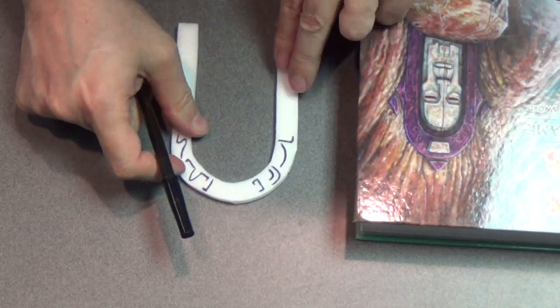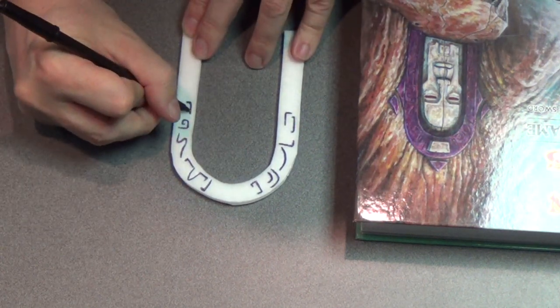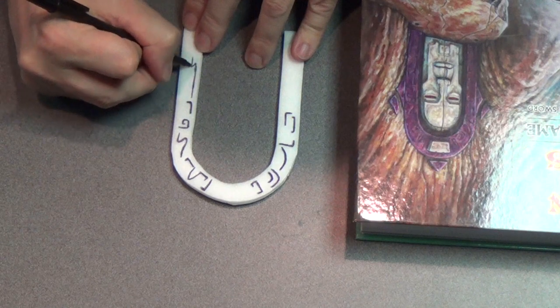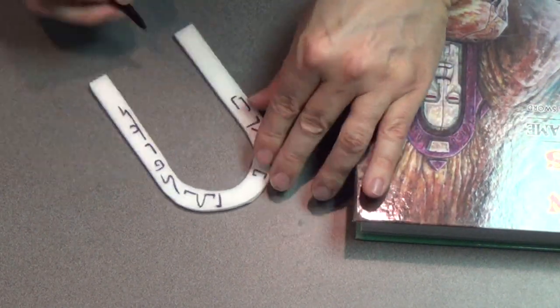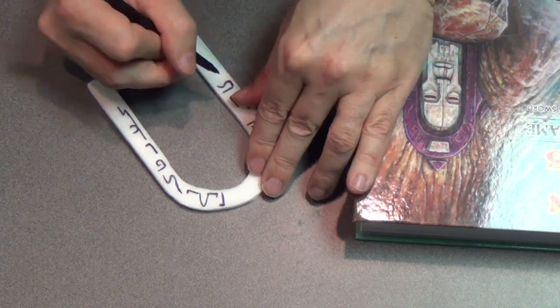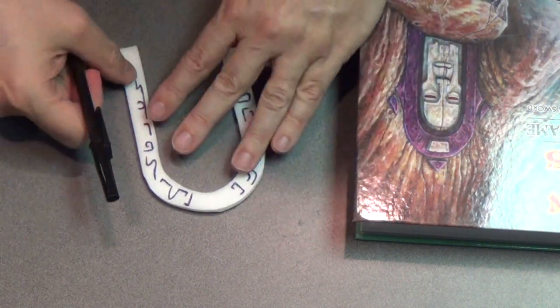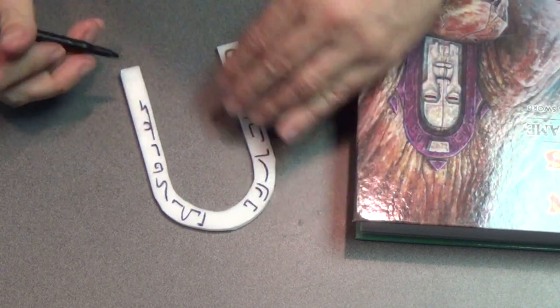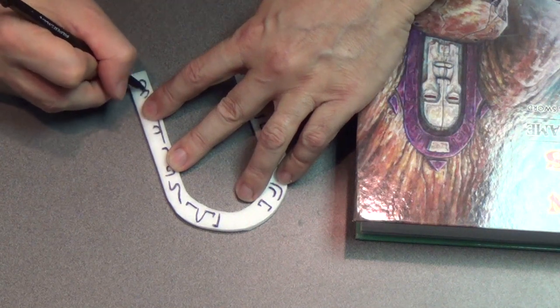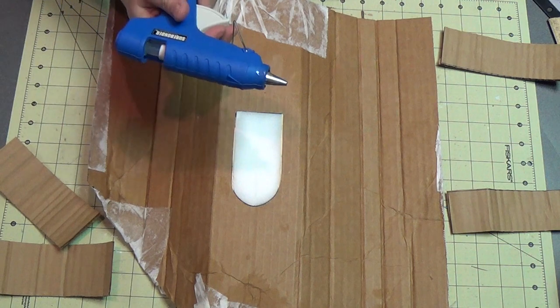There we go. Just fill those in. You want to gouge in pretty deep with the pen because you want those to show up nicely when you paint it. You've all seen me do this technique before. Just go around the edge, put all those runes in, symbols. There we go, cool, nice.